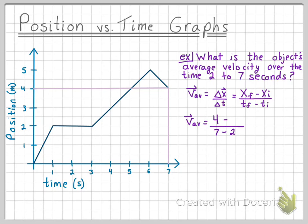Next, we have to find the position of the object at time equals 2. So we do the same exact thing, analyzing the graph, and we find that the position is 2. So we can then simplify this average velocity equation, and we find that the average velocity is equal to 0.4 meters per second.